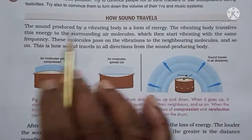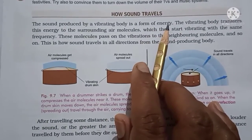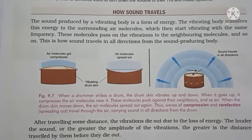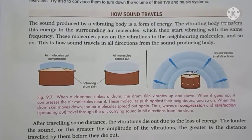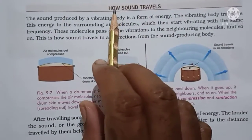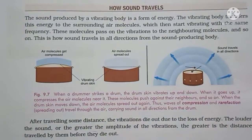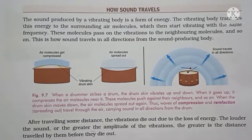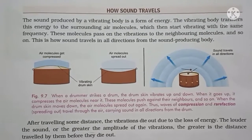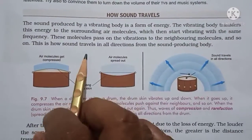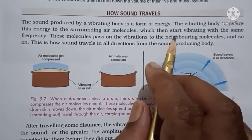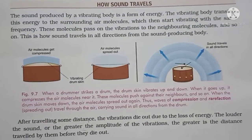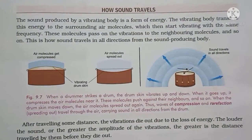The sound produced by a vibrating body is a form of energy. Sound is a form of energy, and this energy requires a medium to travel. Sound is produced by vibrating bodies, and these vibrating bodies transfer energy to the surrounding air molecules, which then start vibrating with the same frequency. These molecules pass on the vibrations to neighboring molecules, and then the next one, and so on.